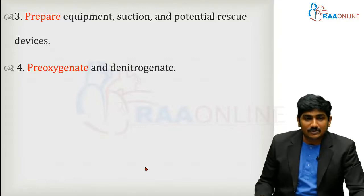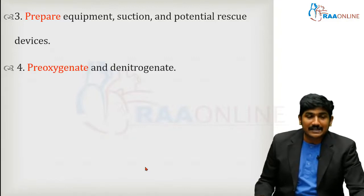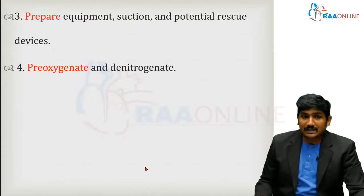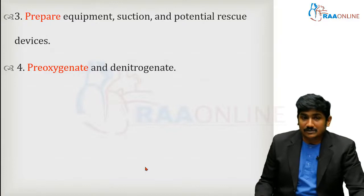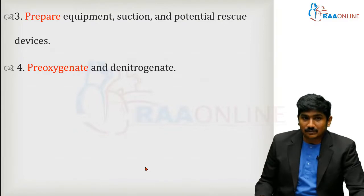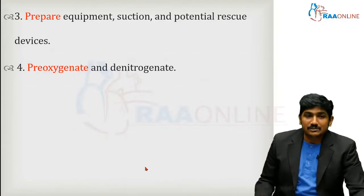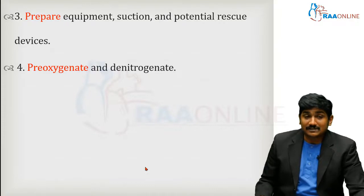The next step is pre-oxygenation and denitrogenation. In rapid sequence intubation, you may not always get adequate time to pre-oxygenate because the patient may have a full stomach and be hemodynamically deteriorating. At best, do whatever pre-oxygenation is possible — the more adequate the pre-oxygenation, the more time you purchase for intubating.